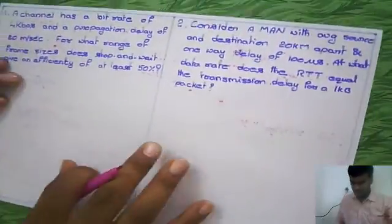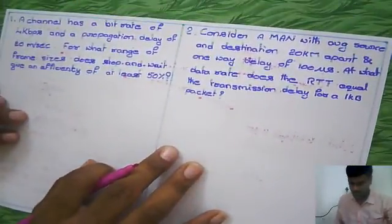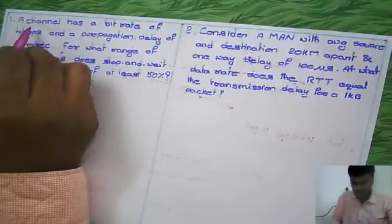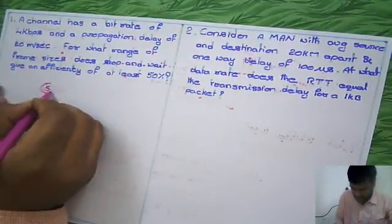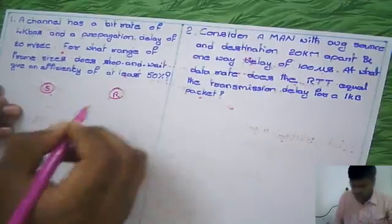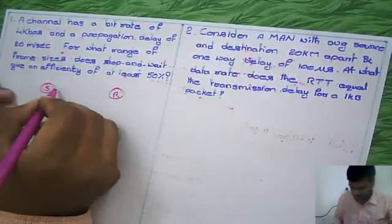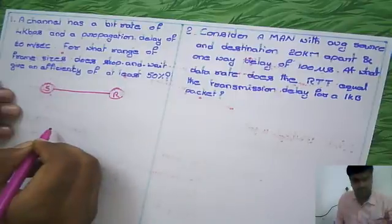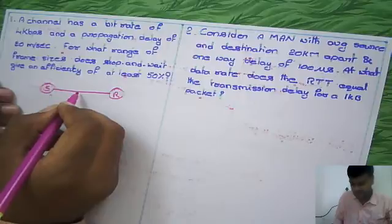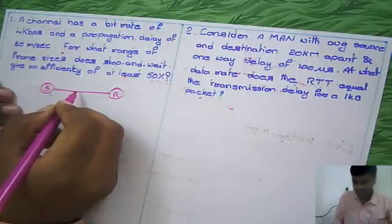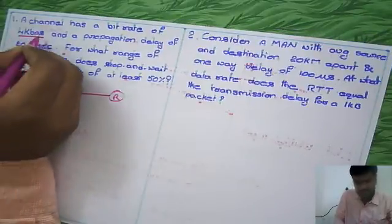How are we going to solve these two problems? Let's see the first problem. A channel has a bitrate. Suppose here we have the sender, we have the receiver, and we have a channel which is used to transmit the data. This channel obviously has some bitrate, meaning bandwidth. That bandwidth here is given as...